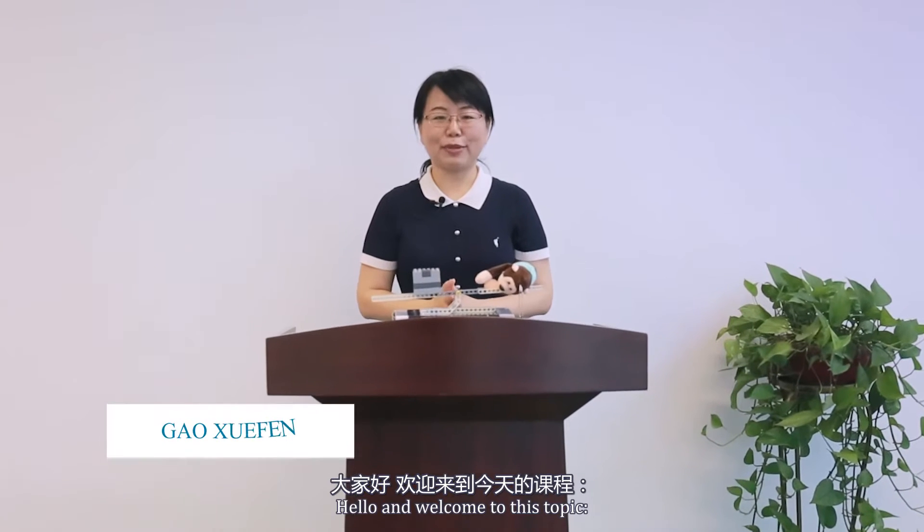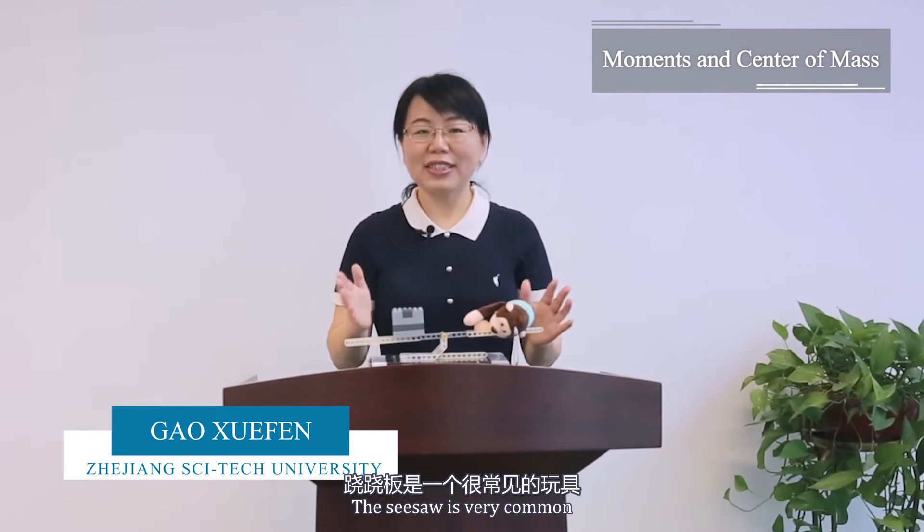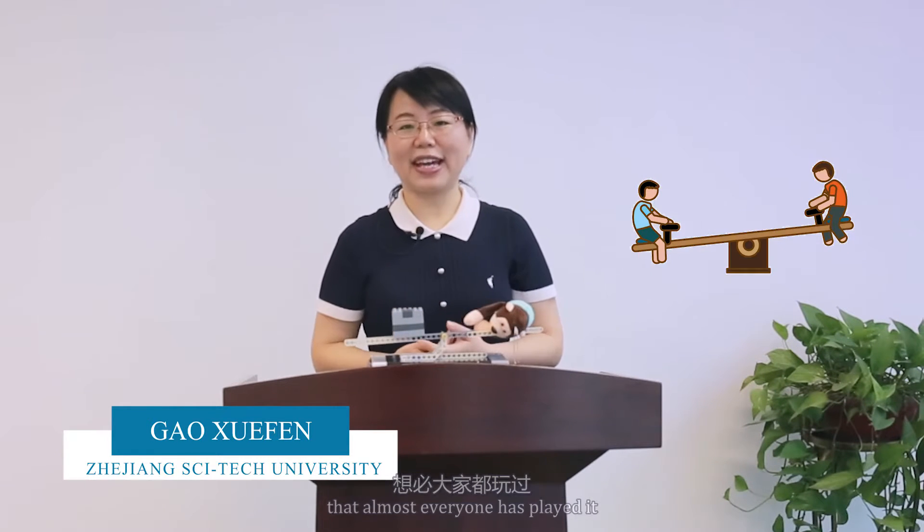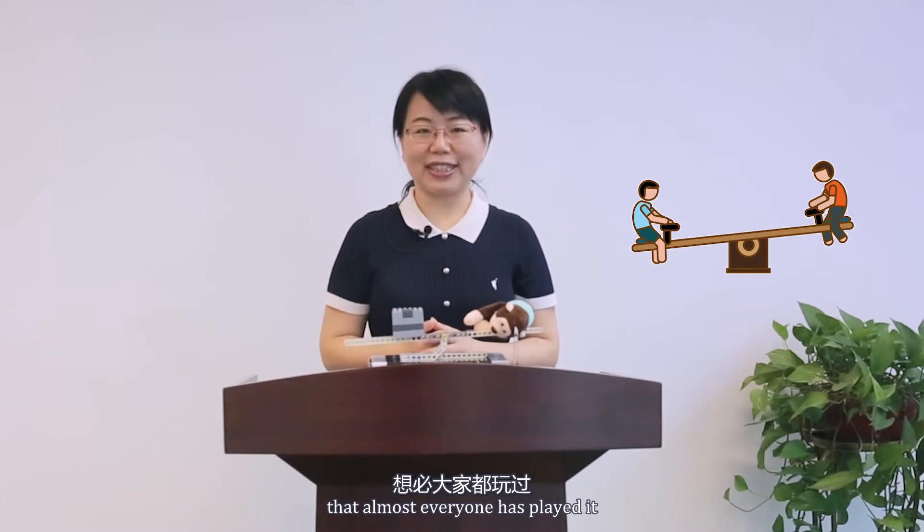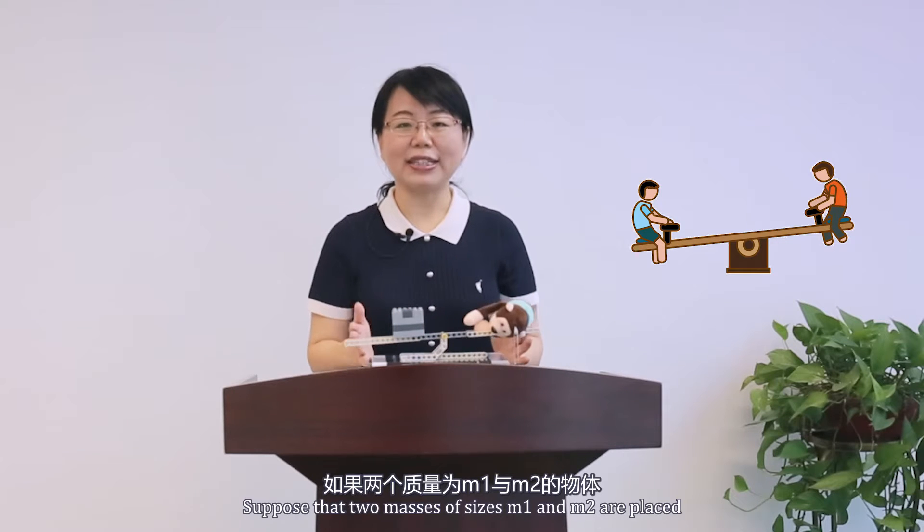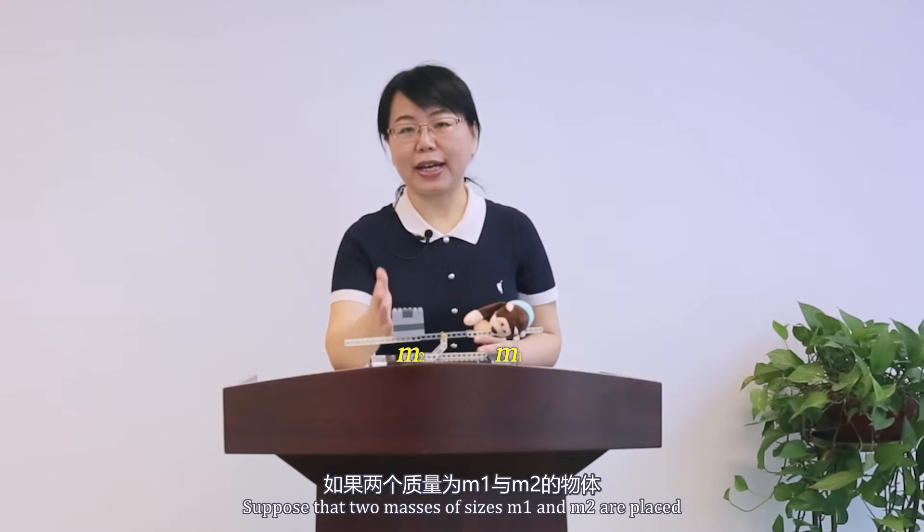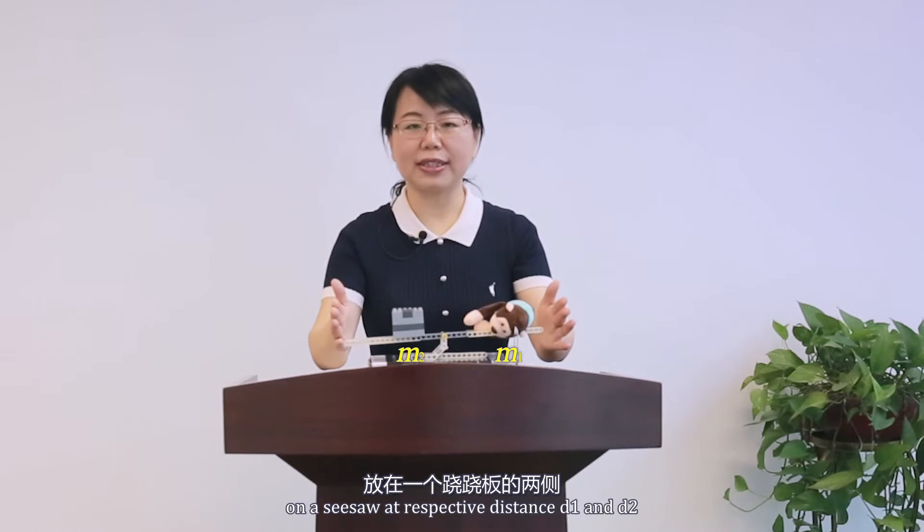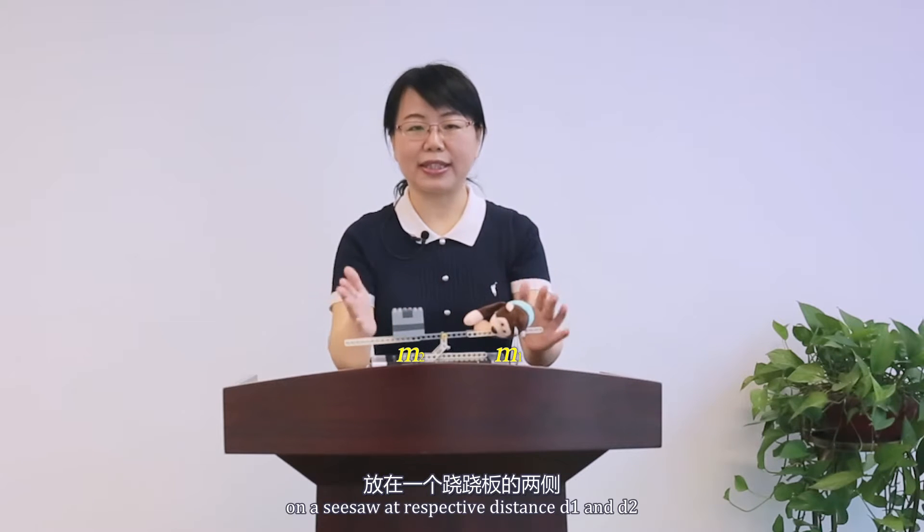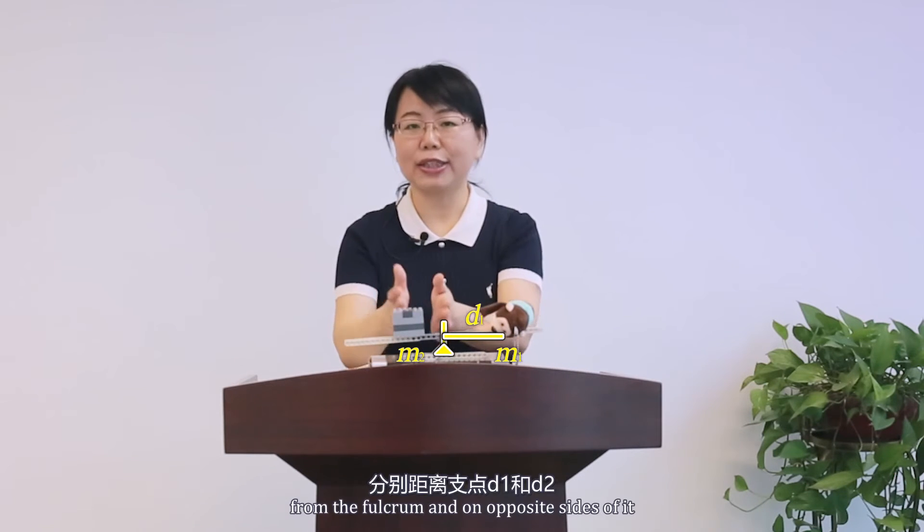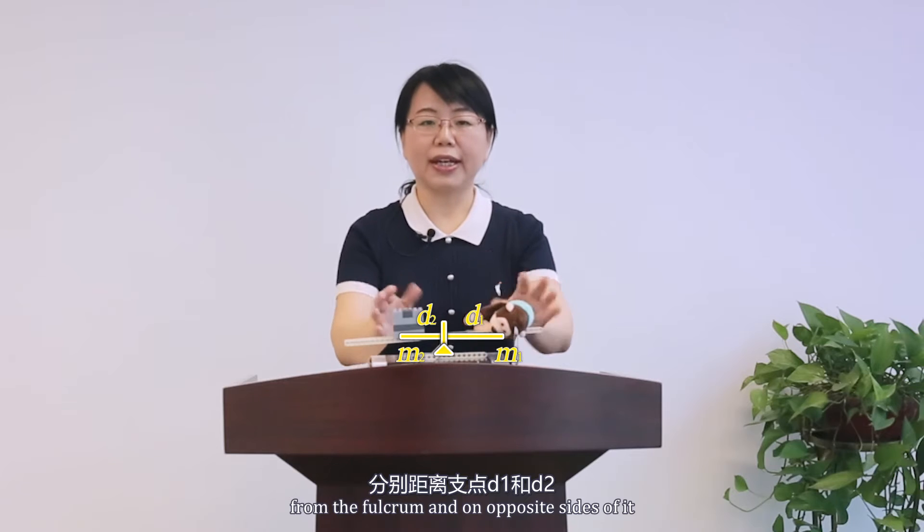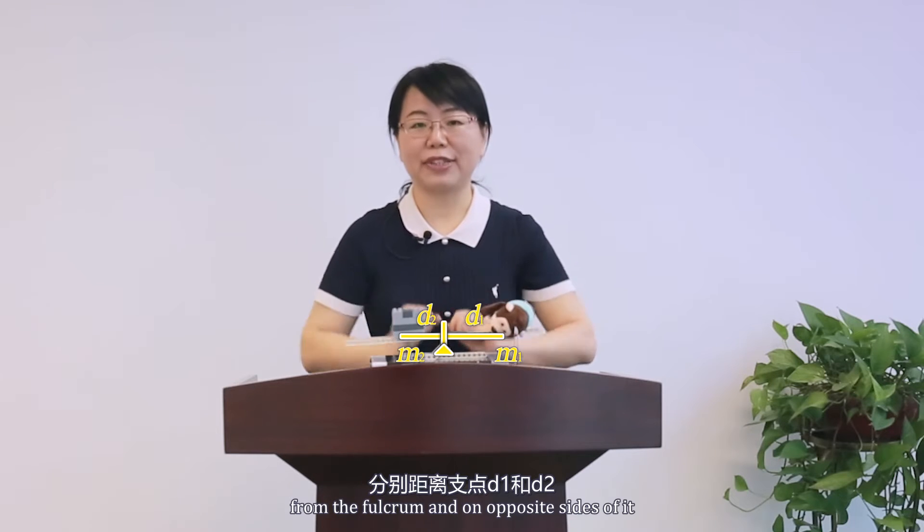Hello and welcome to this topic, Moments at the Center of Mass. The see-saw is very common that almost everyone has played it. Suppose that two masses, M1 and M2, are placed on the see-saw at respective distances D1 and D2 from the fulcrum and to opposite sides of it.